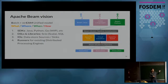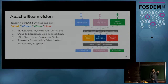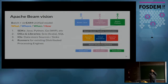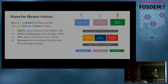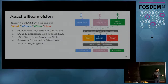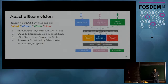Every Beam pipeline answers four questions. We have SDKs today in Java and Python, with Go work in progress. We have libraries on top of these: Scio is a Scala library, and there's SQL support starting now. We have runners — the systems where we execute this — and connectors to different data stores like Kafka and Hadoop.